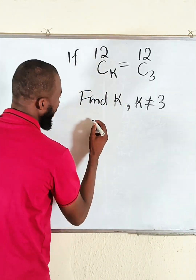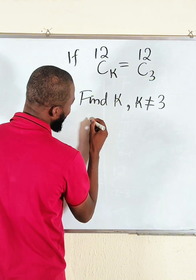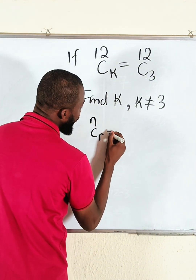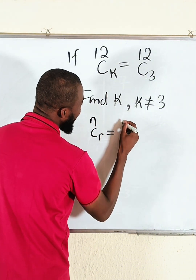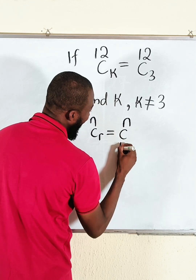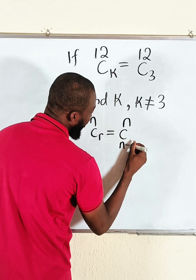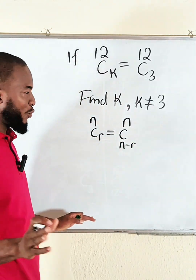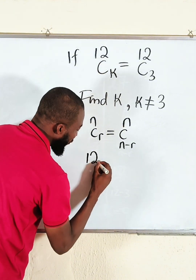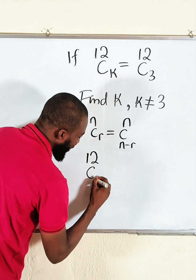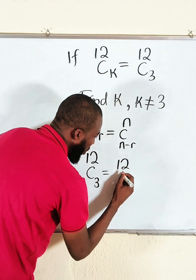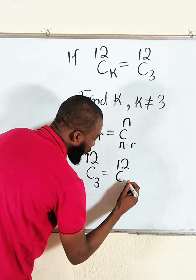Let me show you this key metric about combinations. If you have n combination r, you should know that this is the same thing as n combination n minus r. This is always true. Therefore, 12 combination 3 can also be written as 12 combination — they are equivalent, because they are going to give us exactly the same value.